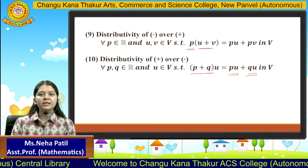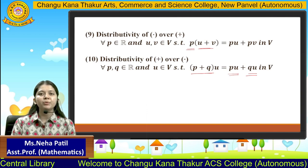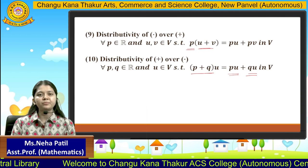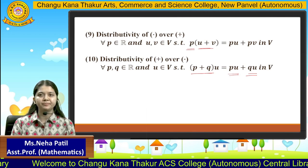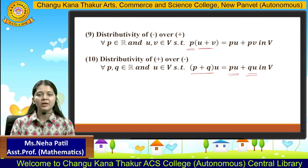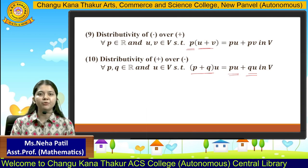Even if one property fails, the set can never be called a vector space. I hope this is clear to you all.